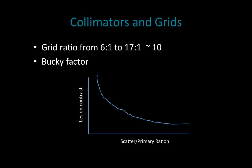For example, looking at the scatter-to-primary (S/P) ratio versus lesion contrast: with a low scatter-to-primary ratio — meaning scatter is low — we have great lesion contrast. However, as scatter increases and our ratio decreases, so does our image contrast. It's a sigmoidal curve: as we increase scatter, lesion contrast decreases. That's the whole reason why we use grids in some of our imaging.